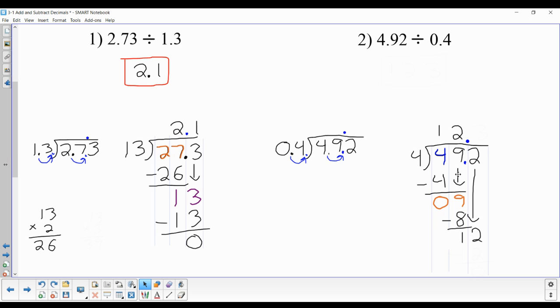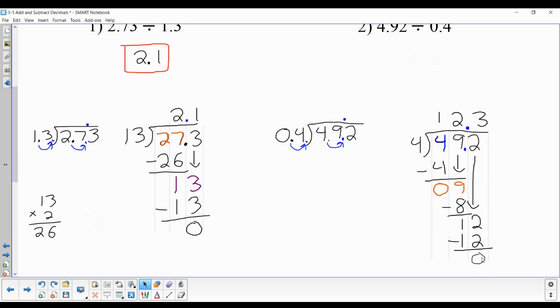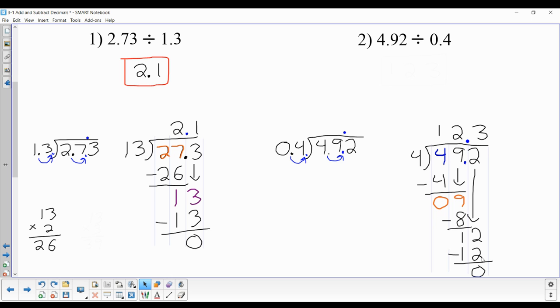We bring down the next number. 4 goes into 12 three times. Because 4 times 3 is 12. And when subtracting, we get a 0, meaning that we're going to be done. 4.92, we go back to the original numbers, divided by 0.4 is 12.3.